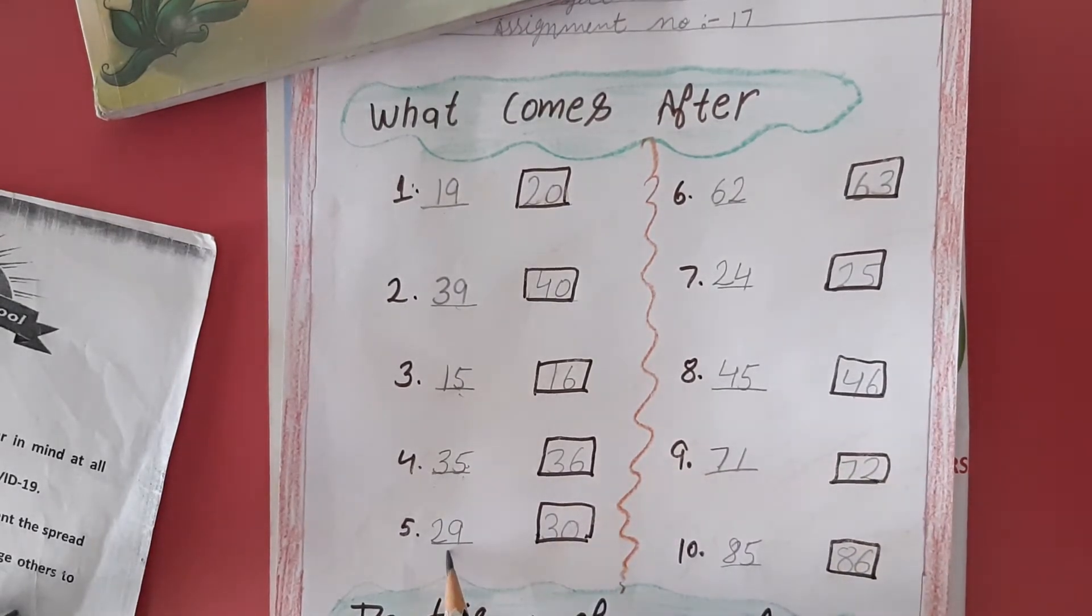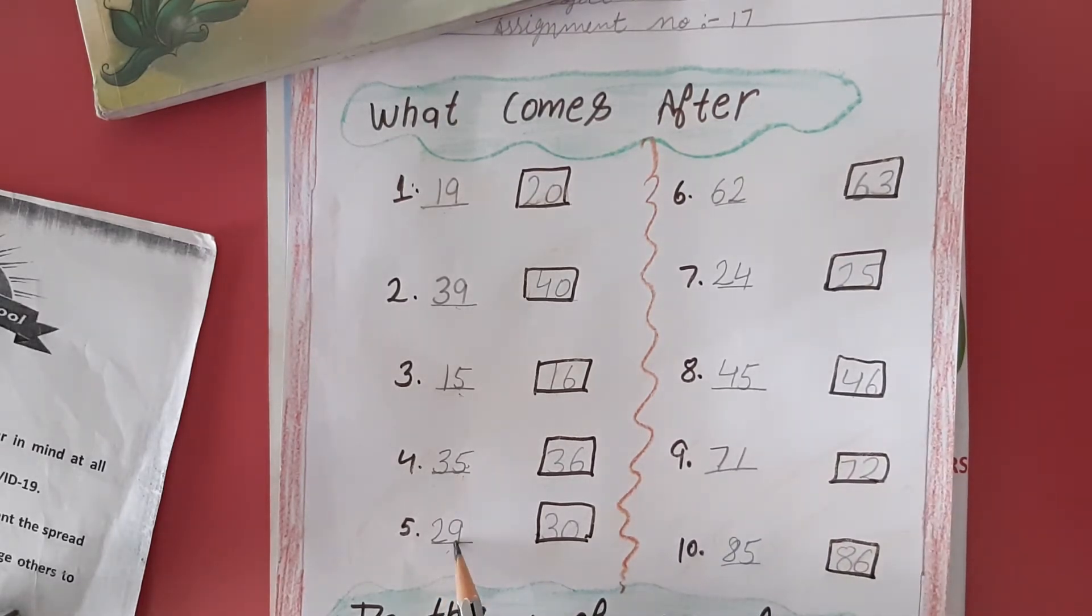Next, 29 is given. What comes after 29? That is 30, so we will write 30 here.